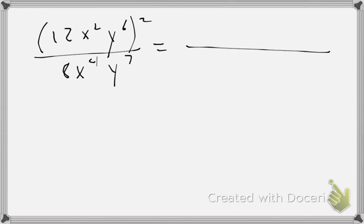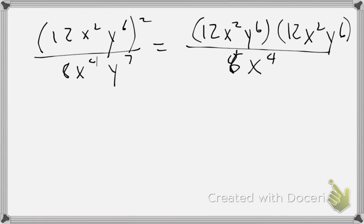You have 12x squared, y to the 6th, all of it squared, divided by 8x to the 4th, y to the 7th. We know for a fact that I have to have 2 parentheses that are the same, correct? 12x squared, y to the 6th, 12x squared, y to the 6th. All of it over 8x to the 4th, y to the 7th. You can combine multiply on the top here.